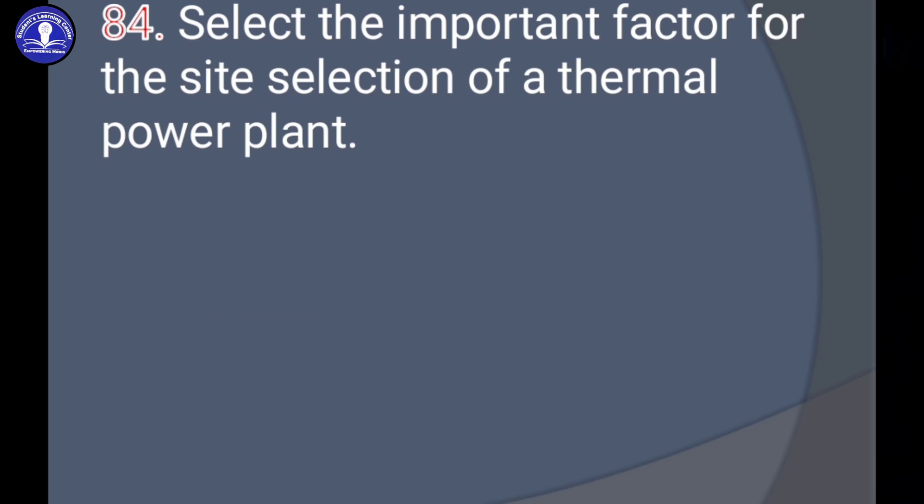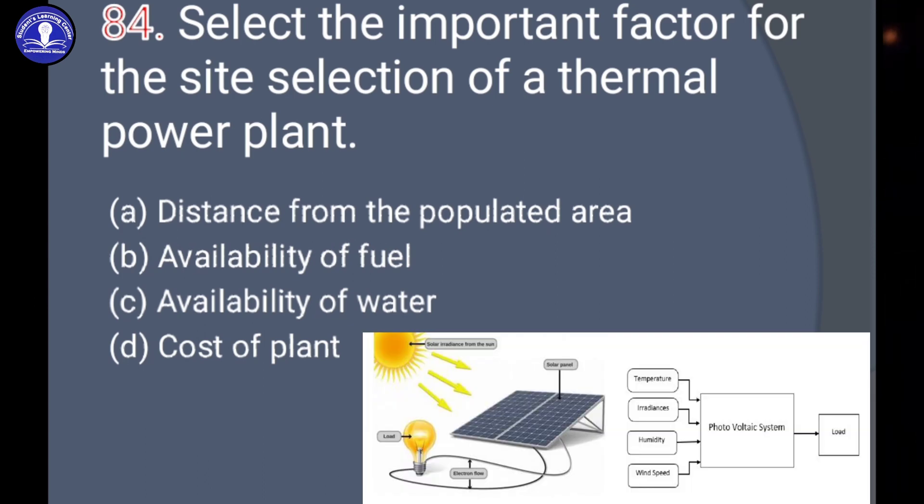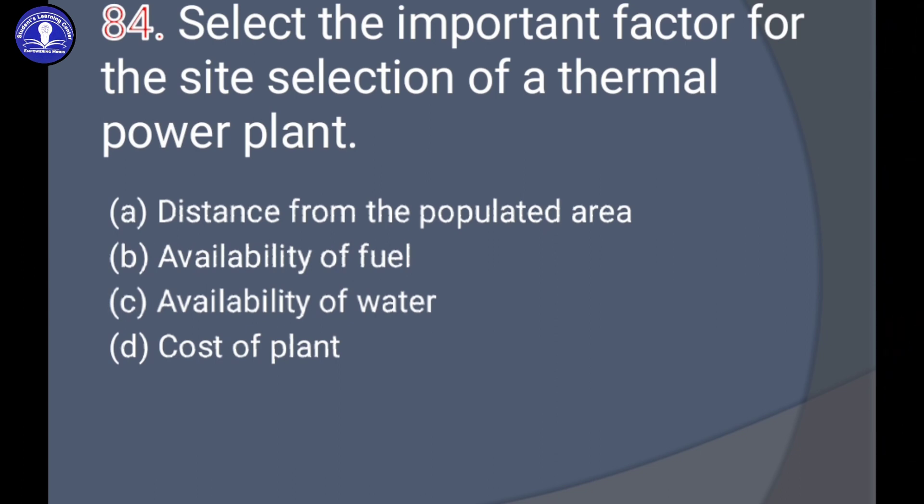Next question: Select the important factor for the site selection of the thermal power plant. The options are distance from the populated area, availability of fuel, availability of water, and cost of the plant. A thermal power station is a power station in which heat energy is converted into electricity. So the answer is option C, availability of water.